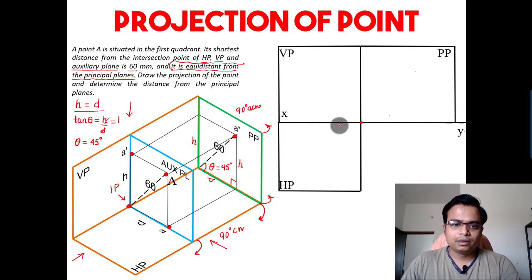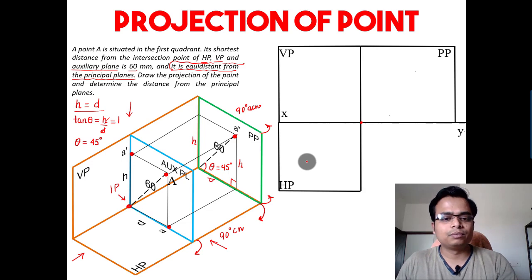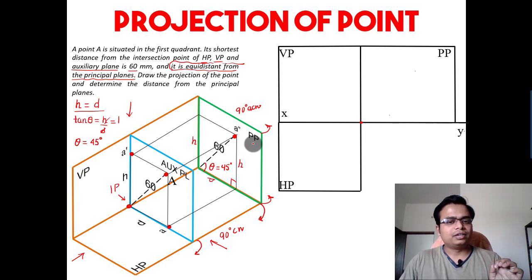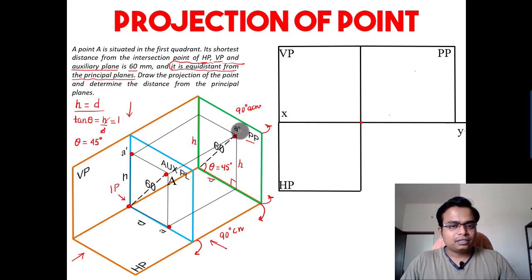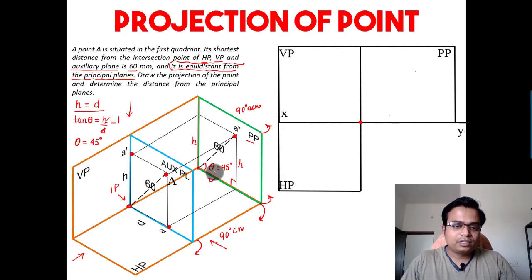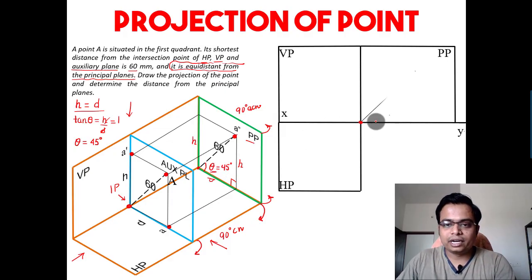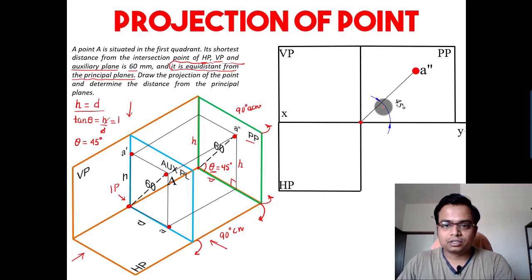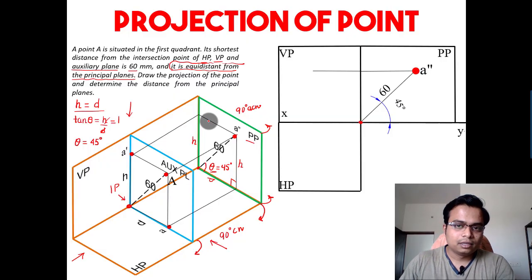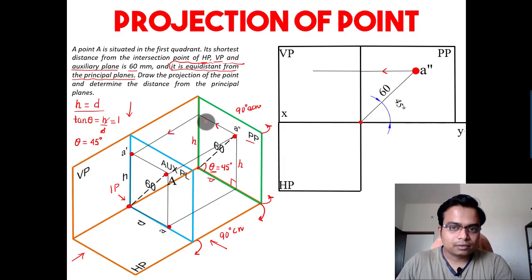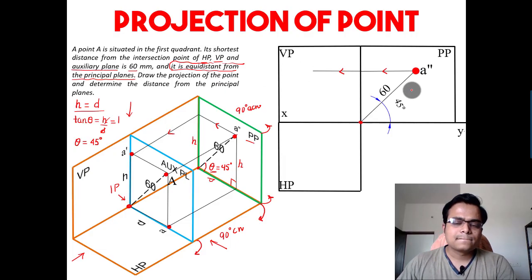This is the intersection point. We don't know the value of H, so we cannot use the vertical plane; we don't know D, so we cannot use the horizontal plane either. What we can use is the profile plane, because we know that a double dash is at a distance of 60 millimeters from this intersection point, at an angle of 45 degrees. So a double dash is at 45 degrees and 60 millimeters from the intersection point.